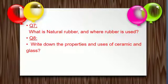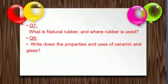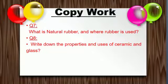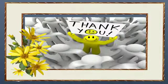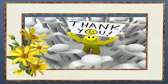Now for copy work: first, write down the index and prepare your page. Question number seven is: what is natural rubber and where is rubber used? Question number eight is: write down the properties and uses of ceramic and glass. You will write down both ceramic and glass, and you will also draw the diagrams in your blank page. Students, thank you so much. Take care of yourself, be happy, smile.